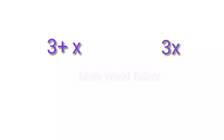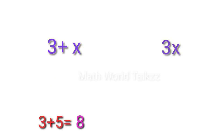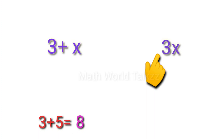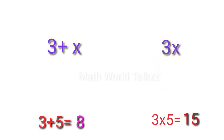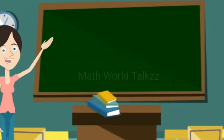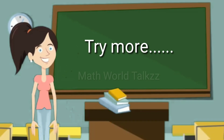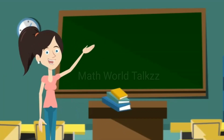Is there any difference between 3 plus x and 3x? 3 plus x means 3 added to a number — so if 5 is the number, 3 plus 5 is 8. Now 3x means 3 into x — if 5 is the number, 3 into 5 is 15. So both are different: 3 plus x is not equal to 3x. Try more problems to get a clear idea of algebraic expressions. That's all for now, thank you.